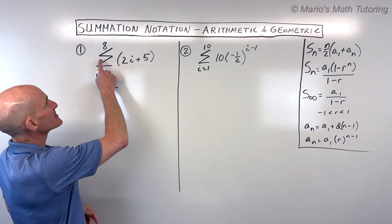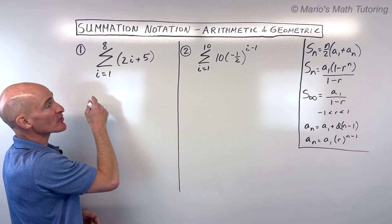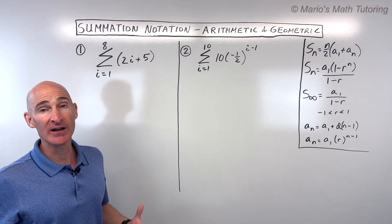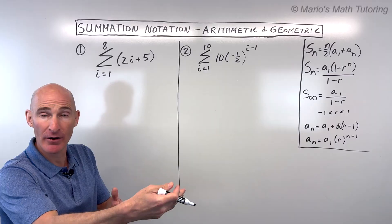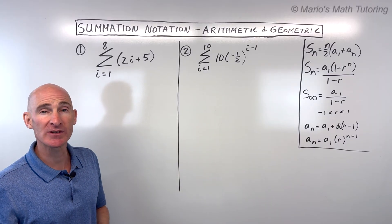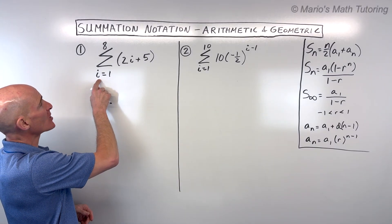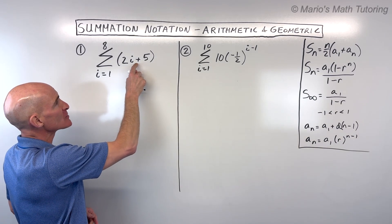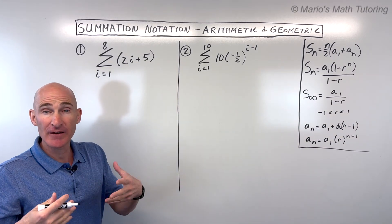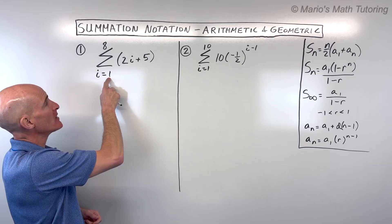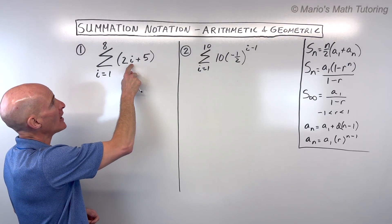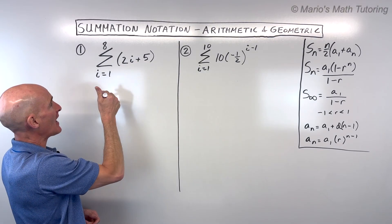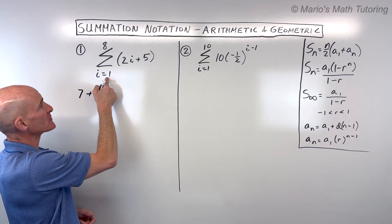We're given this symbol right here, which is referred to as the Greek letter sigma, and it represents the sum of a series. A series is a sum of terms. What you do is you start at this bottom index and you put this index into this rule or formula to find the value of a particular term. So in this case, when the index is one, two times one is two plus five is seven. That's the value of this first term.